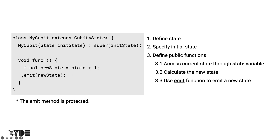Next, in func1, a new state is calculated and the current state value can be accessed through the state variable provided by Cubit. When the new state is calculated, the new state is dispatched to the state stream using the emit function provided by Cubit. Note that emit is a protected function. In other words, you cannot call the emit function outside the subclass of Cubit.